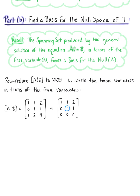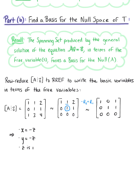Looking at our second pivot, we use it to eliminate the entry above it by doing minus the second row plus the first row, which leaves us with the row reduced matrix: [1, 0, 1; 0, 1, 1; 0, 0, 0]. We have attained row reduced echelon form. This matrix tells us that x equals negative z, that y also equals negative z, and that z is a free variable.